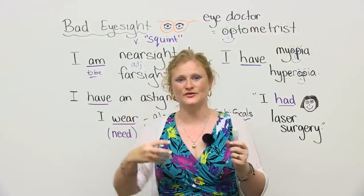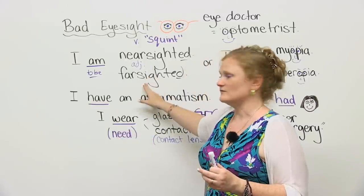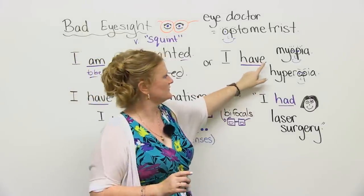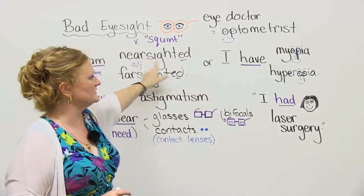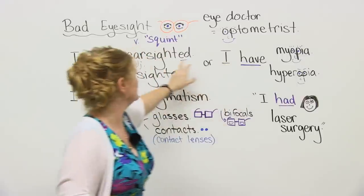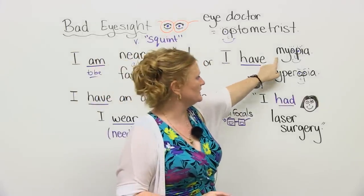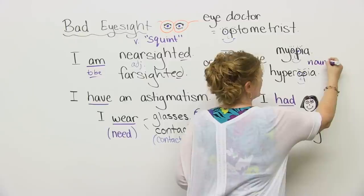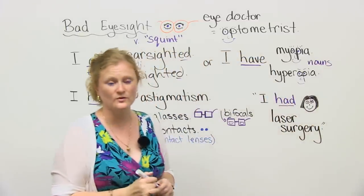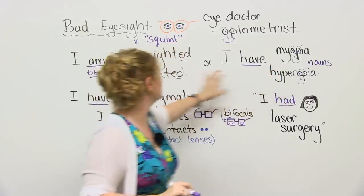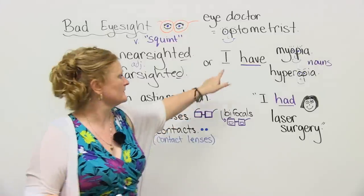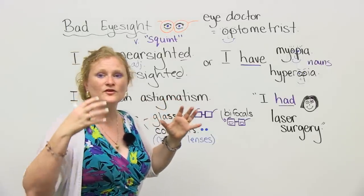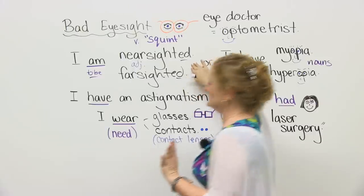These are the layman's terms — the regular terms that we would use for this kind of bad eyesight. The doctor's term for nearsighted is myopia. Myopia means exactly the same as being nearsighted. But myopia and hyperopia are nouns. Because these are nouns, we have to use "have". So you could say "I have myopia" or "I am nearsighted" — they're the same. Or you could say "I have hyperopia" or "I am farsighted". Most commonly, we would use nearsighted and farsighted.